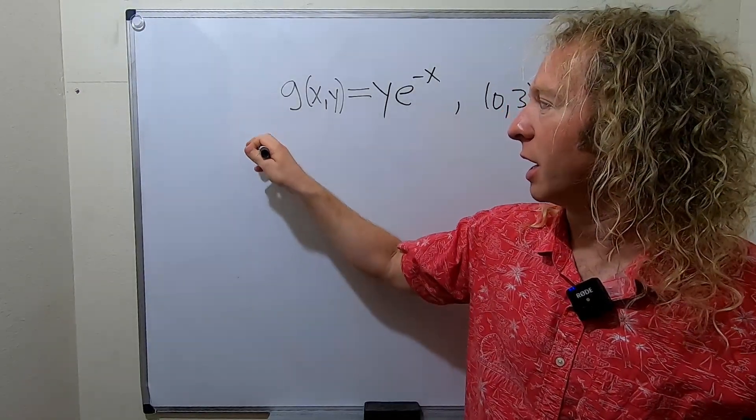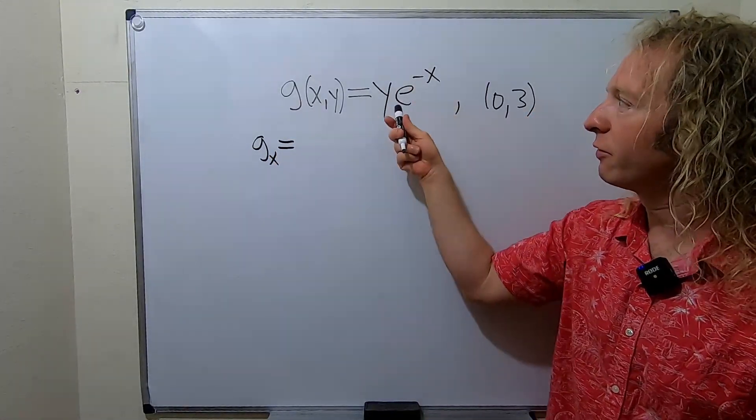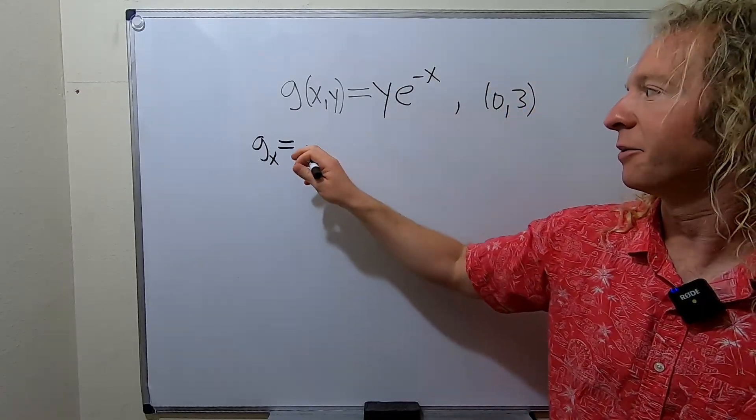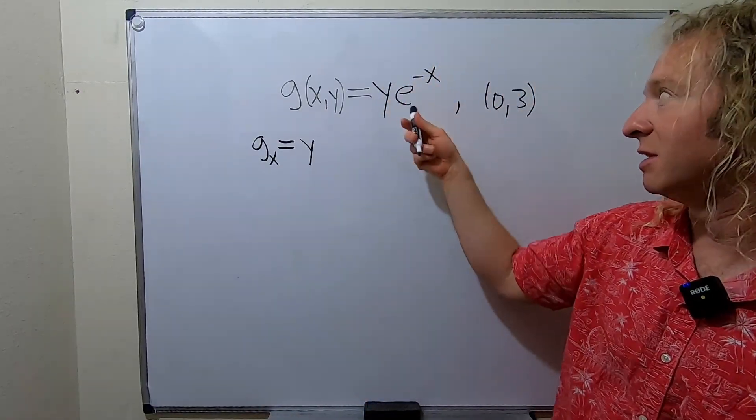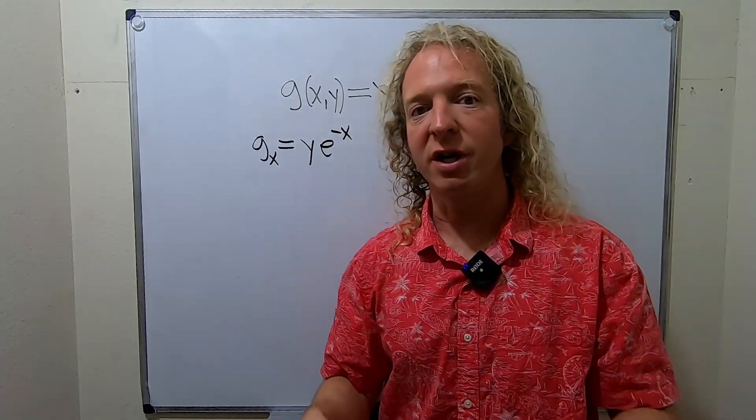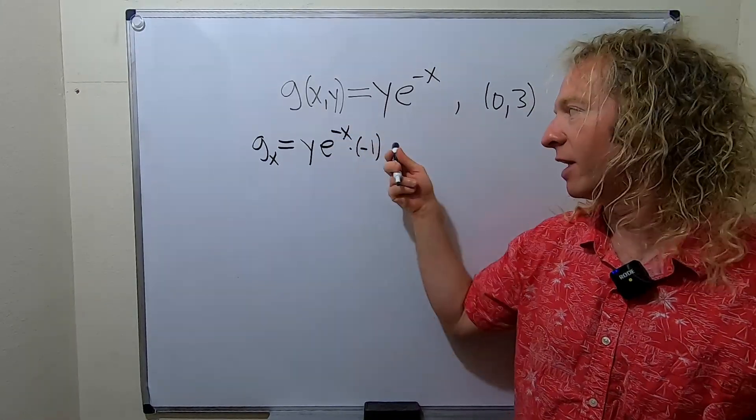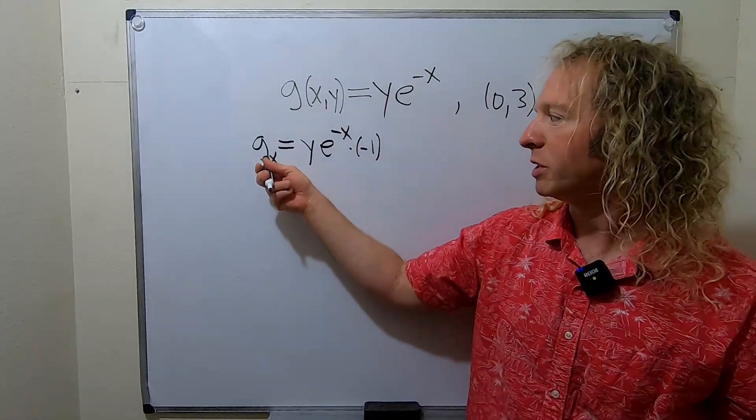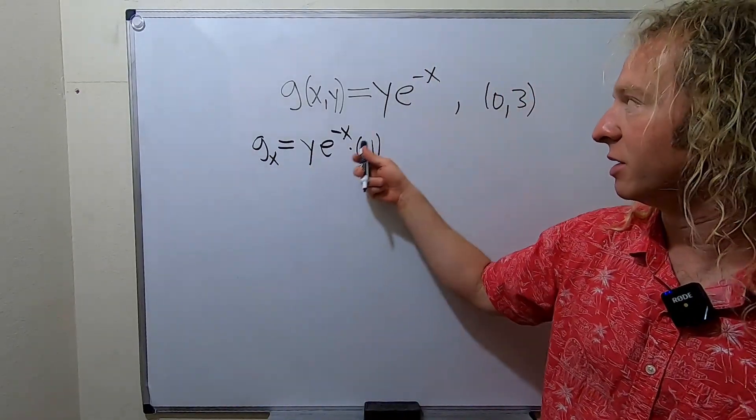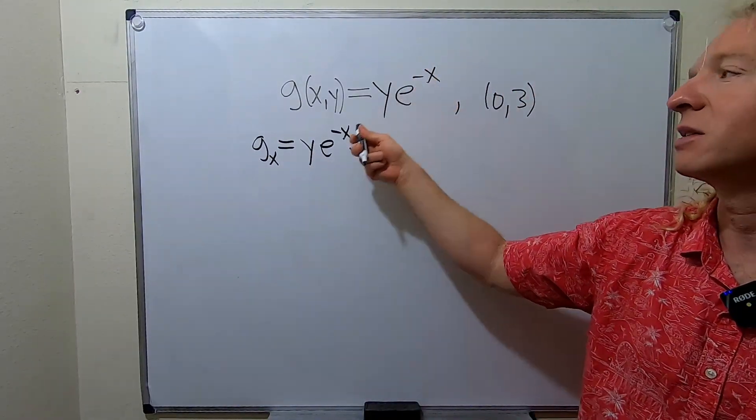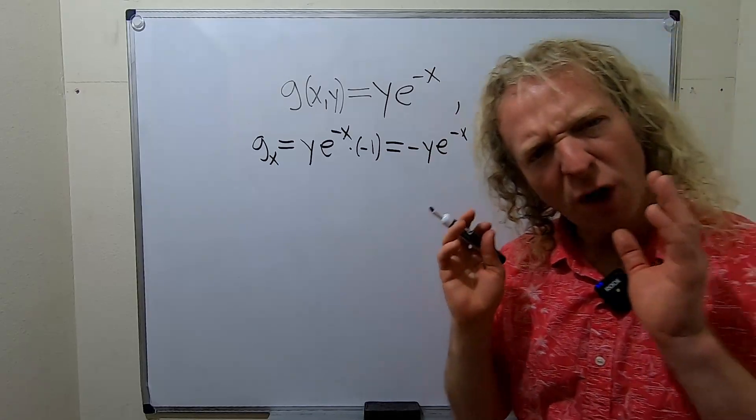So we'll start by computing gx. This is the partial derivative with respect to x. That means we treat all of the y's as constants. The y hangs out and when you take the derivative of e to the x you just get e to the x. So here it's e to the negative x times the derivative of the inside function. That's the chain rule. So this will be times negative 1 because the derivative of negative x is negative 1. Again when we take the partial with respect to x we treat all the other variables as constants. In particular y is a constant. The derivative of e to the negative x is e to the negative x times the derivative of the inside. So this is going to be the first component of our gradient vector.